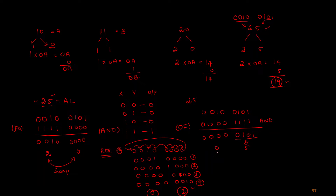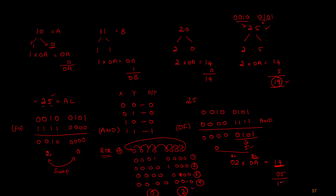After rotating, we have 02 and 05. The 02 has to be multiplied by 0A to get 14 in the AX register. Then 05 is stored in a temporary register, and adding 05 to 14 gives the final value of 19. This is the overall logic for converting a BCD equivalent to its hexadecimal equivalent.